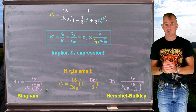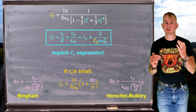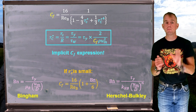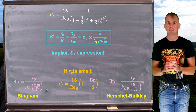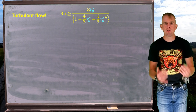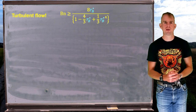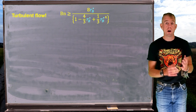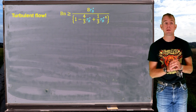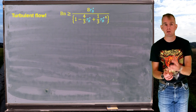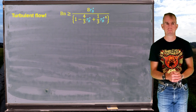So if R_C* is small, c_f is 16 over Bingham Reynolds number times (1 + Bingham number over 6). This discussion so far has focused on laminar flow. We need to know as an engineer where that laminar flow regime stops and where we get flow transition into turbulent flow.